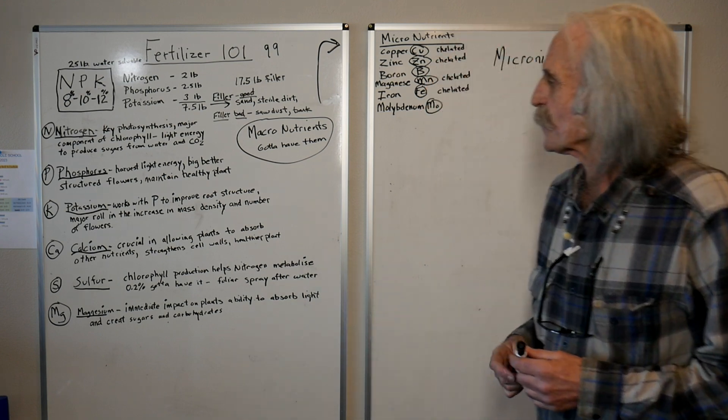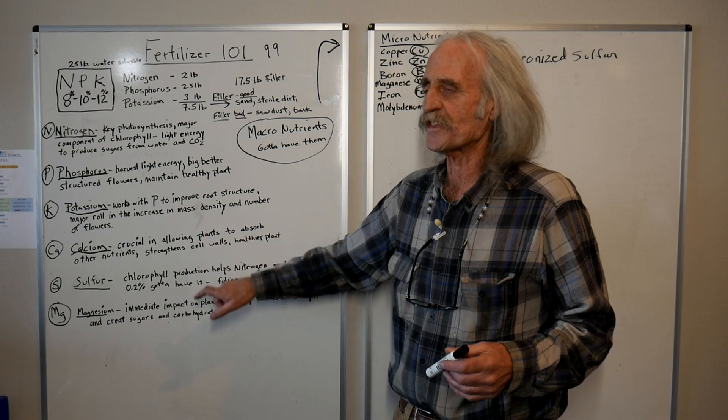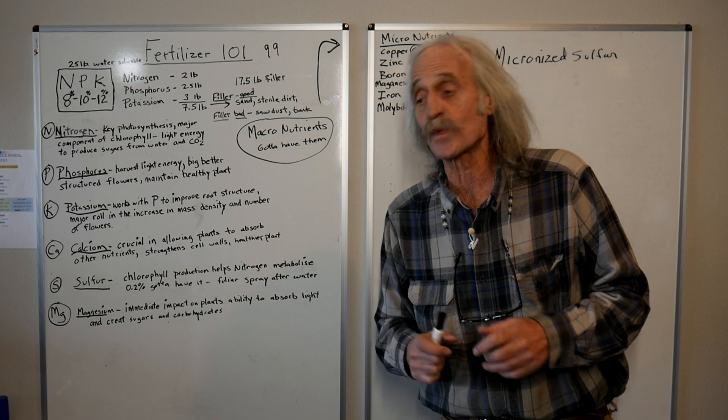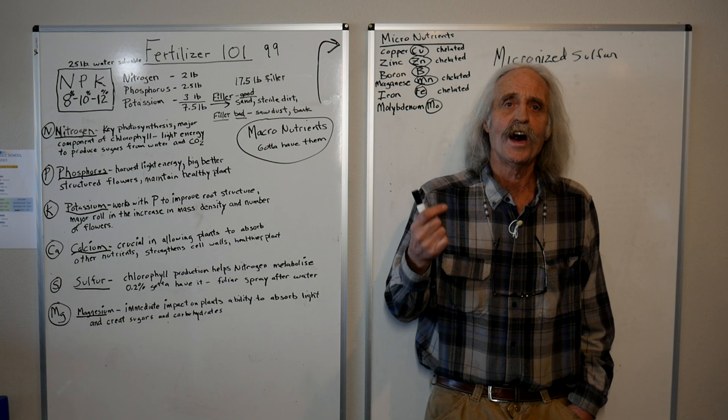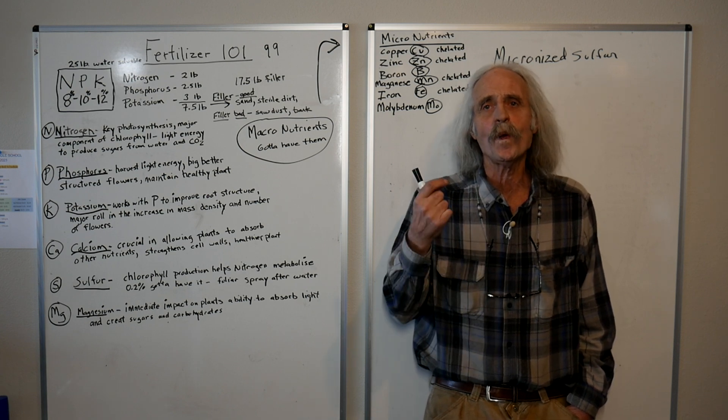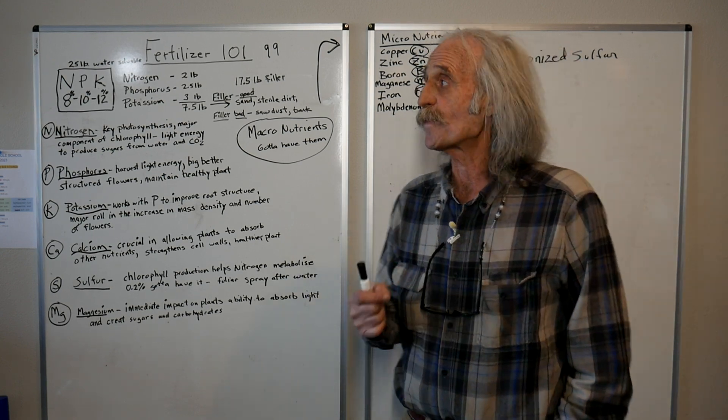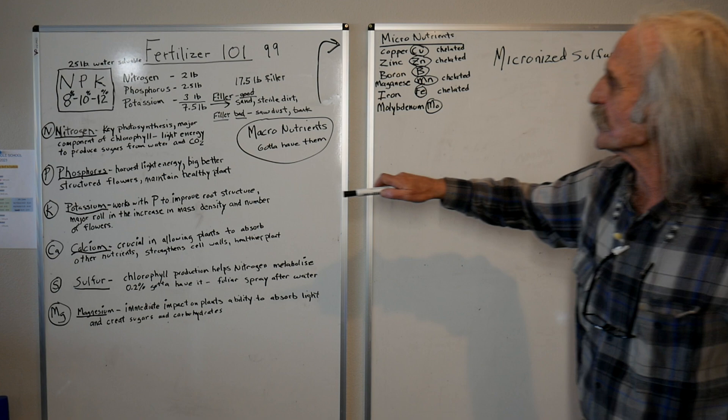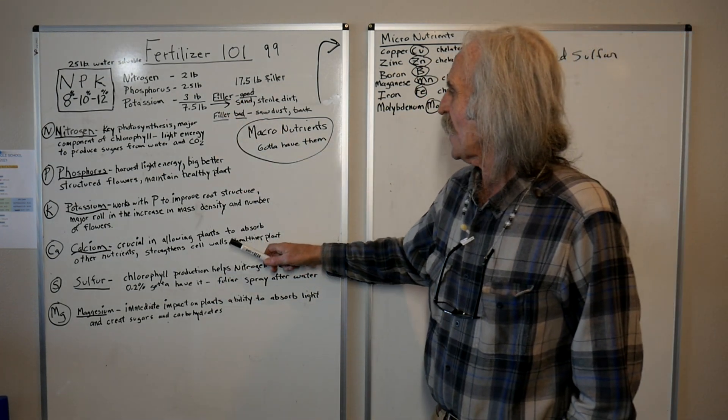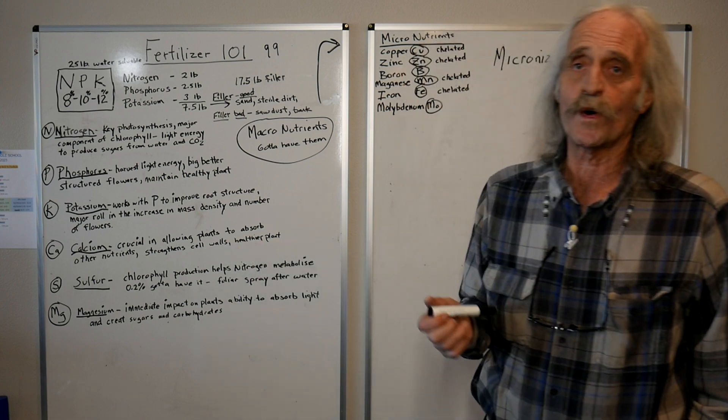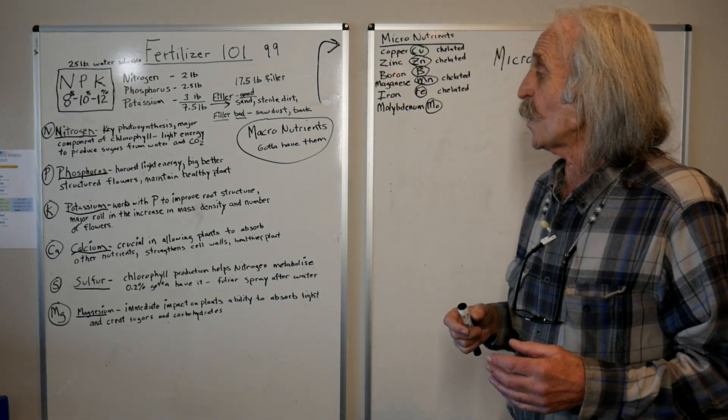Now, we've got three more here. Sulfur is the outlier. We'll go with calcium and magnesium first. Calcium is really crucial. Calcium helps the plant uptake all your other nutrients that you have in your fertilizer. All of them. The micronutrients and the macronutrients. You got to have them. Calcium also promotes a healthier plant. Stronger cell walls. It's also a must.